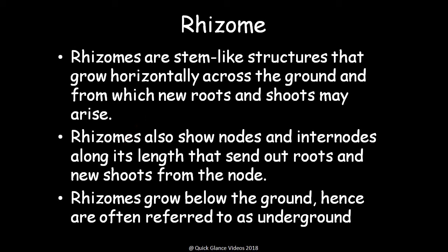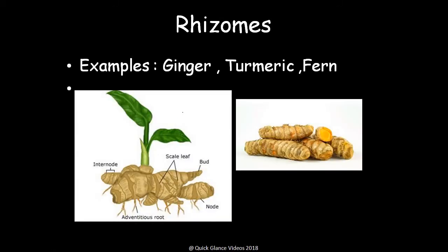Rhizome: rhizomes are stem-like structures that grow horizontally across the ground, forming roots and shoots from the nodes. Rhizomes show nodes and inter-nodes along their length, sending out roots and new shoots from the nodes. Rhizomes grow below the ground and are hence often called underground stems. Common examples include ginger, turmeric, fern, and others. New plants and adventitious roots emerge from the inter-nodes.